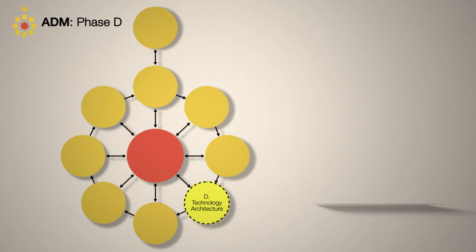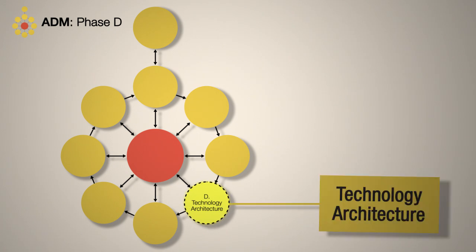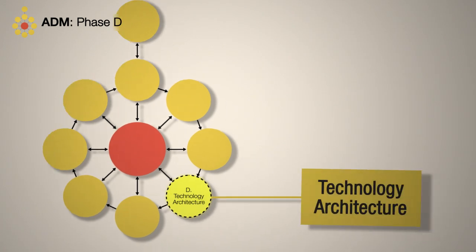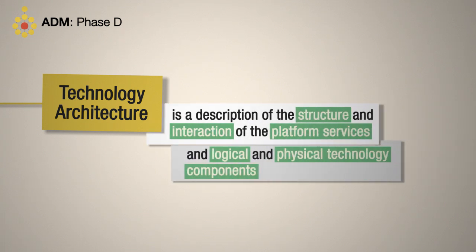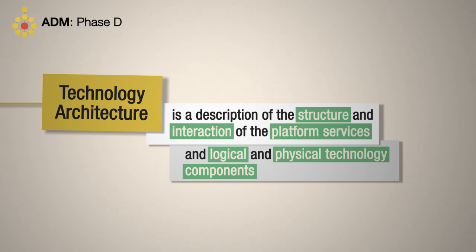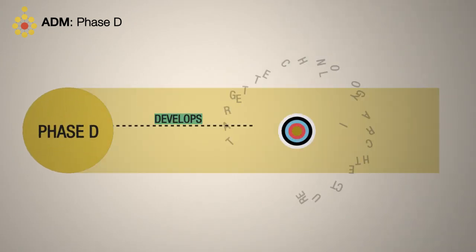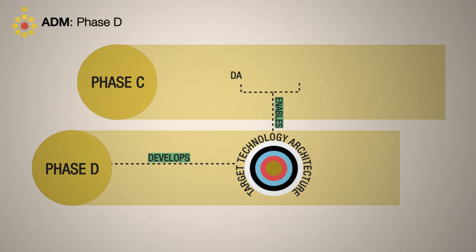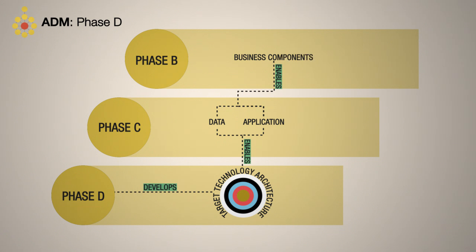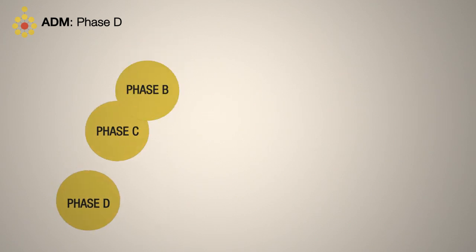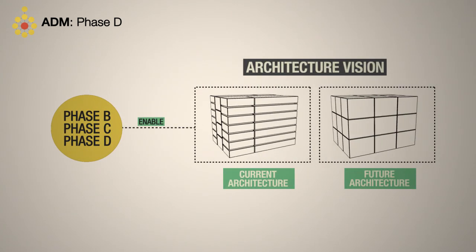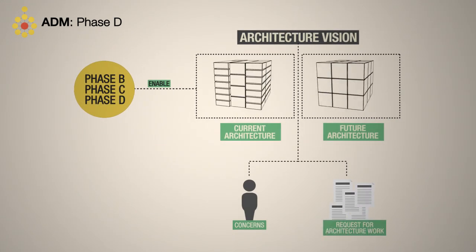Phase D is a phase in TOGAF that develops the technology architecture for an architecture project. Technology architecture is a description of the structure and interaction of the platform services, logical and physical technology components. Phase D develops the target technology architecture that enables the data and application components developed in Phase C, which in turn enable the business components. The architectures developed in phases B, C, and D combine to enable the architecture vision, which addresses stakeholder concerns and the request for architecture work.